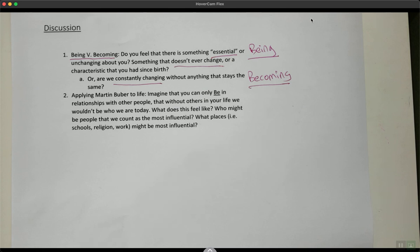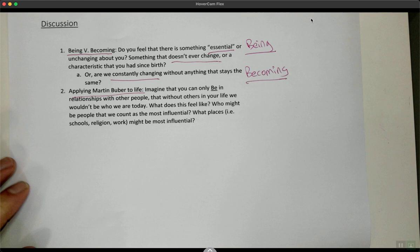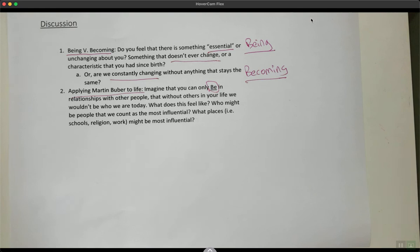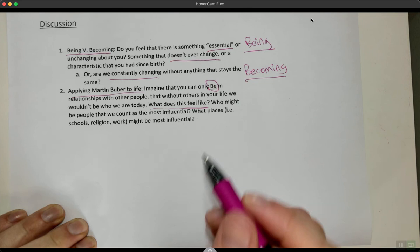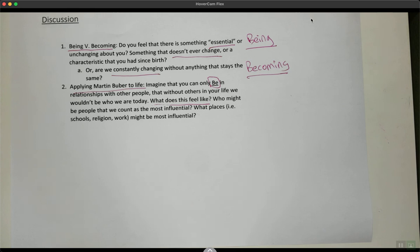Or does this idea of becoming really make sense to you? This idea that we're constantly changing and nothing ever really actually stays the same - does this make more sense? Do you feel this when you go onto social media? Do you feel this when you have multiple social media accounts, when you're a different person perhaps in each context? Are we always becoming, or is there somewhere in between? How do you feel about that? And the second one: if we're applying Martin Buber to life, imagine that you're taking his idea seriously that we can only be, I can only be me, we can only be in relation with other people, that without others in your life we wouldn't be who we are today. So what does this feel like? Who might be these people that you count as your most influential? If you really think about people that have formed an essential part of you, who might these people be? Who might be the most influential people in your life? What places have been the most influential? What has really been a core to your identity and becoming who you are today? Has it been school? Has it been going to church? Has it been a particular family member or a family gathering at a park? Has it been a place? Has it been a person? What are these most influential places and people that help make you who you are today?